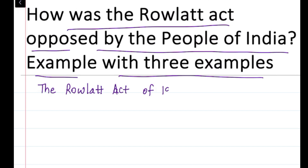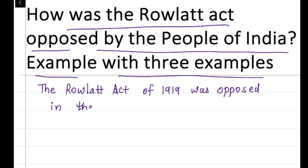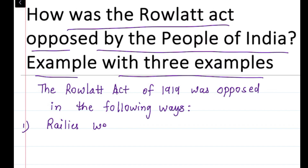The Rowlatt Act of 1919 was opposed in the following methods. First, rallies were organized in various cities.